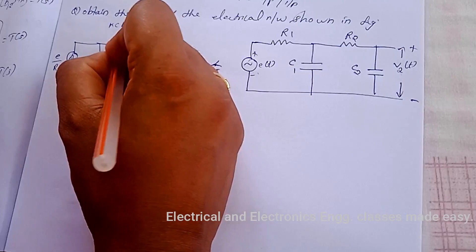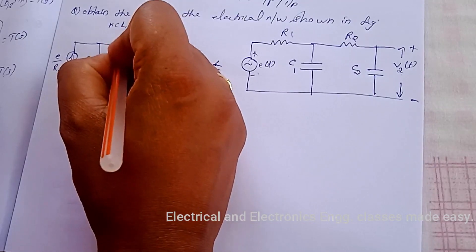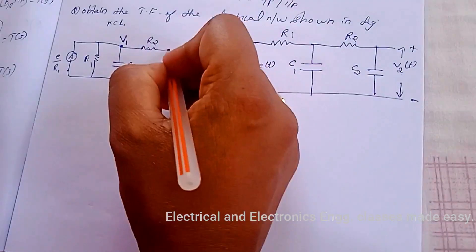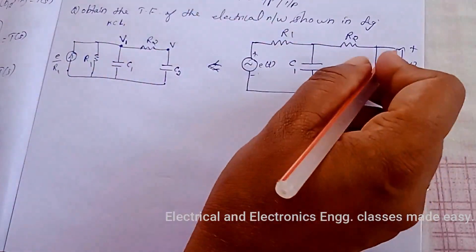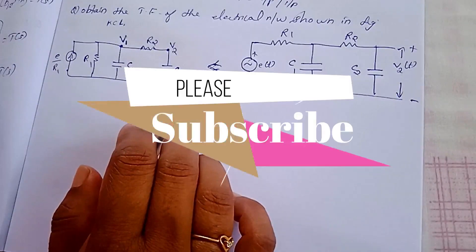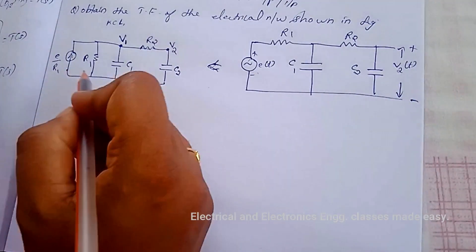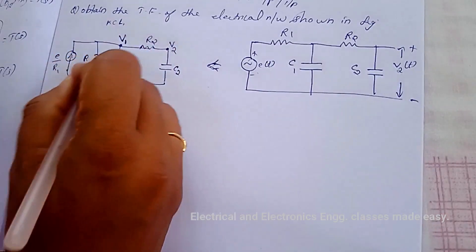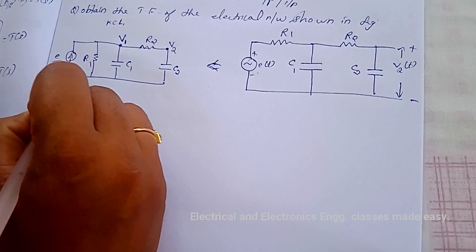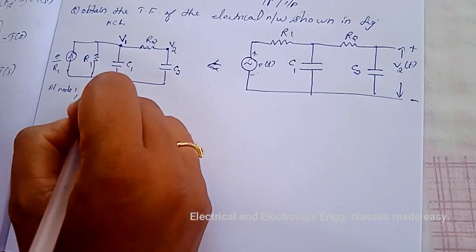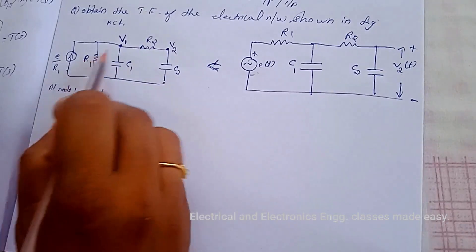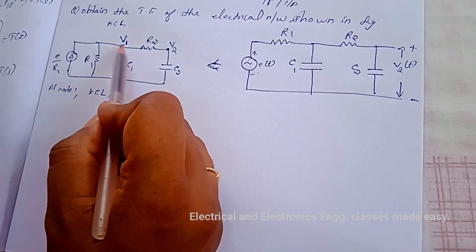Now we can consider two nodes. The first node has voltage v1, and the second node has voltage v2. Now consider node 1.